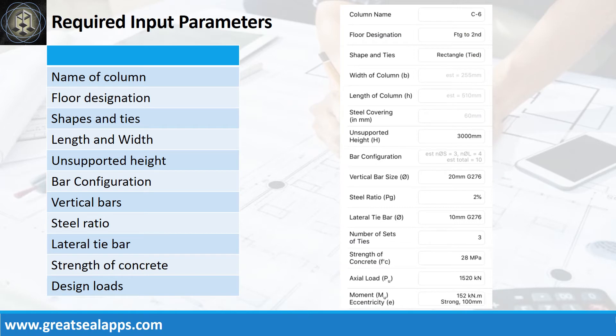Enumerate input parameters required. Column name: C6. Floor designation: footing to second. Shape and ties: rectangle, tied. Steel covering: 60 mm. Unsupported height: 3000 mm. Vertical bars: 20 mm bar at grade 276. Steel ratio: 2%. Lateral tie bars: 10 mm bar at grade 276.